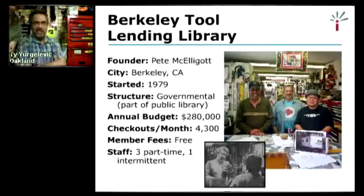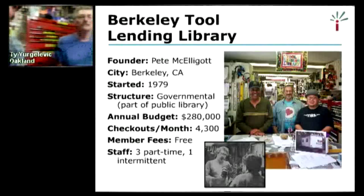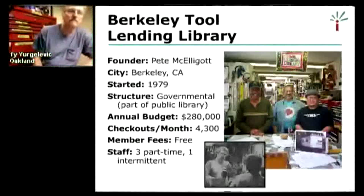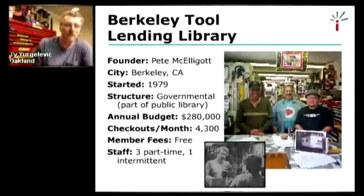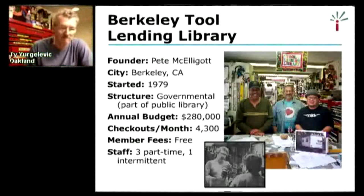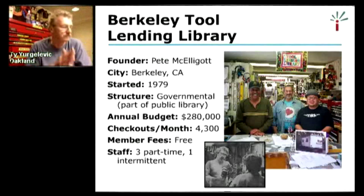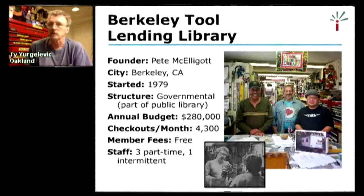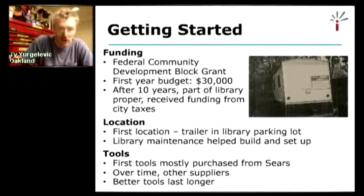We're going to move over to Pete McElligott, the founder of the Berkeley Tool Library. We started back in the day before computers were so omnipresent, so just about everything we did was old school. Our funding came from a CDBG grant — Community Development Block Grant — a program enacted in the 70s to alleviate urban blight. We had an original grant of $30,000. We were able to open up in January of 1979. The location was the South Branch Library in a low-income neighborhood with substantial housing deterioration. We started out in a construction office trailer that we rented. Most of the tools we got originally were from the Sears Industrial Catalog.